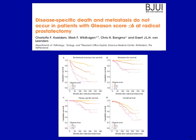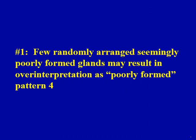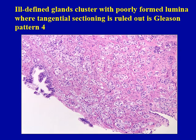Let me share some of the common pitfalls that I see in prostate biopsy practice that result in over-interpretation of pattern 3 as pattern 4. The first two pitfalls are related to the poorly formed glands criteria. Pathologists often over-interpret a few randomly arranged, seemingly poorly formed glands as Gleason pattern 4. This criteria was introduced in the 2005 ISUP modified grading system and was defined as a cluster of poorly formed glands — where tangential sectioning is ruled out — warranting a diagnosis of Gleason pattern 4.